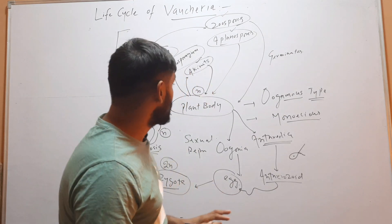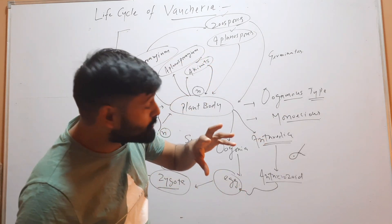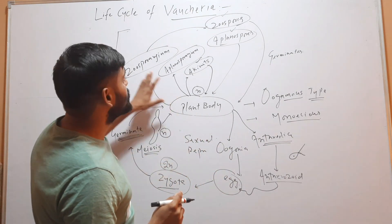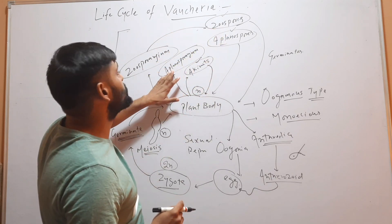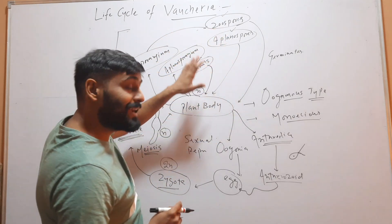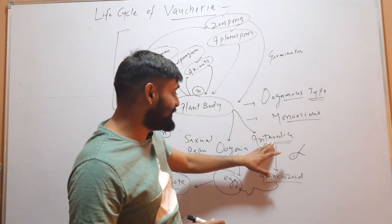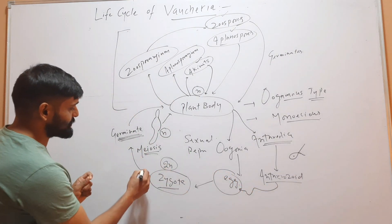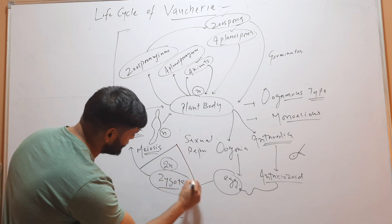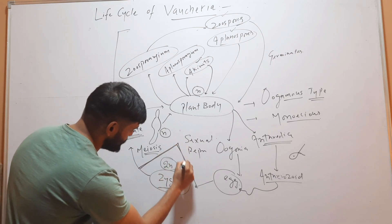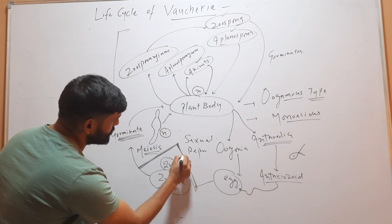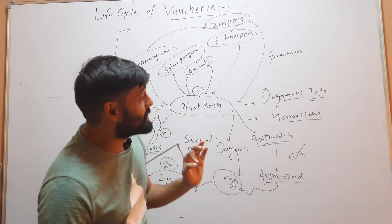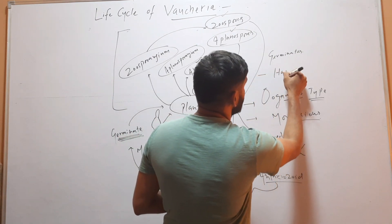In this entire life cycle, all stages have a haploid body. The plant body is haploid, the zoosporangium is haploid, zoospores are haploid, the aplanosporangium is haploid, aplanospores are haploid, akinetes are haploid, the antheridium is haploid, the oogonium is haploid, eggs are haploid, and antherozoids are haploid. The only diploid structure in this life cycle is the zygote — except for the zygote, all structures are haploid.